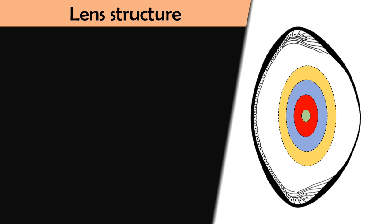Next is lens structure or parts of lens. Histologically, lens is basically composed of three structures, and these structures are lens capsule, anterior lens epithelium, and lens fibers, which we'll see each one by one.